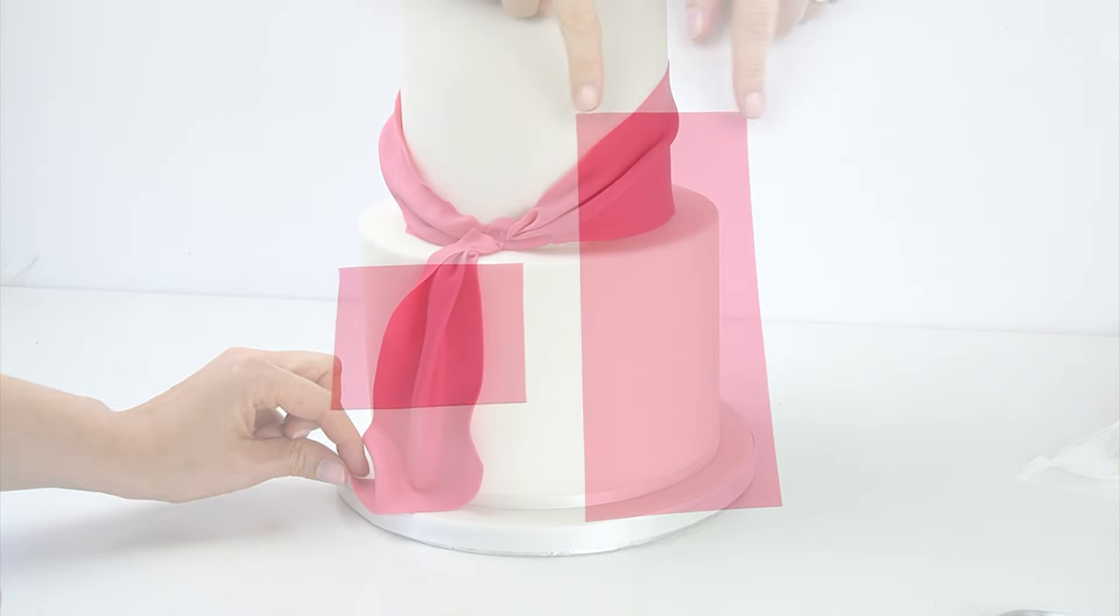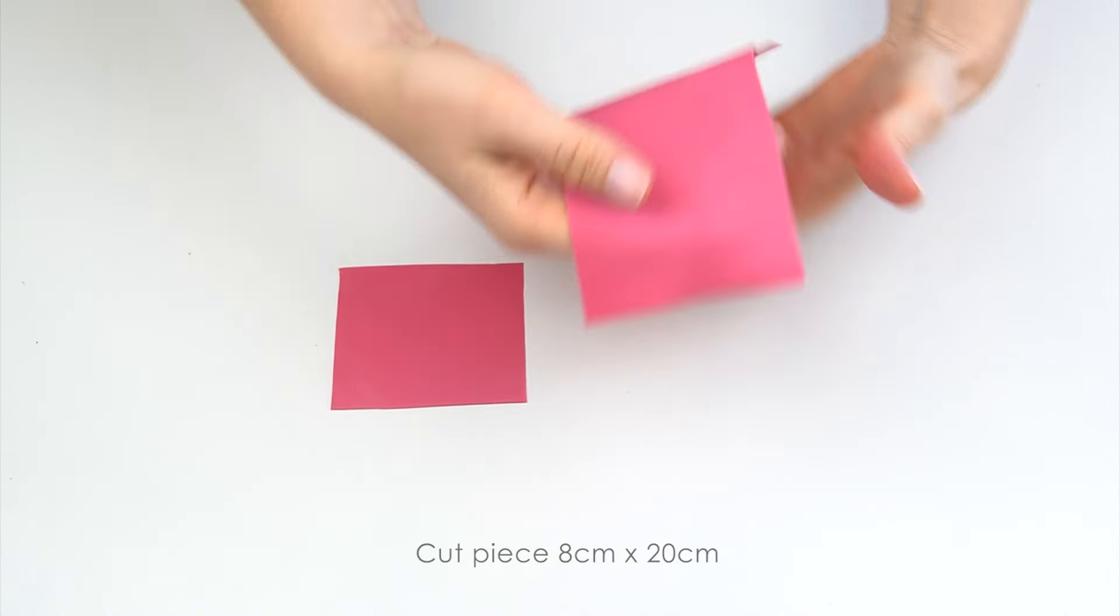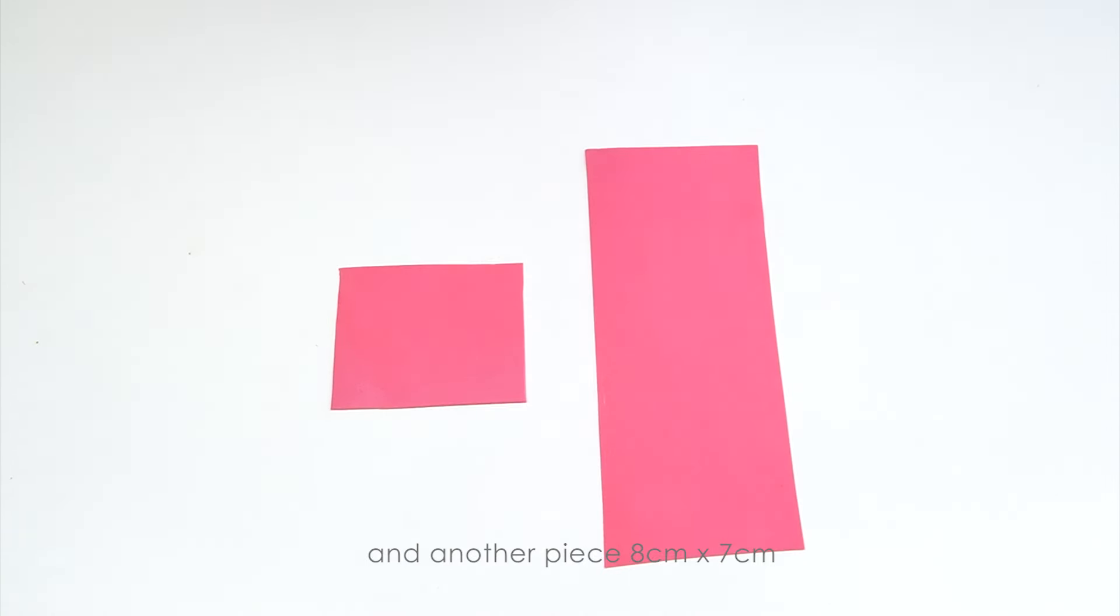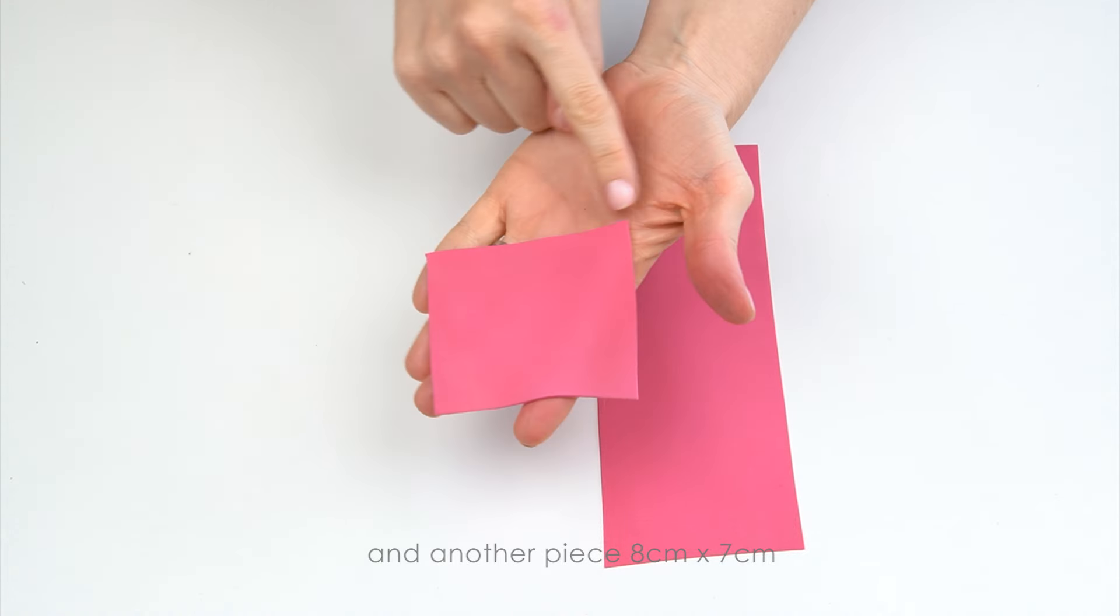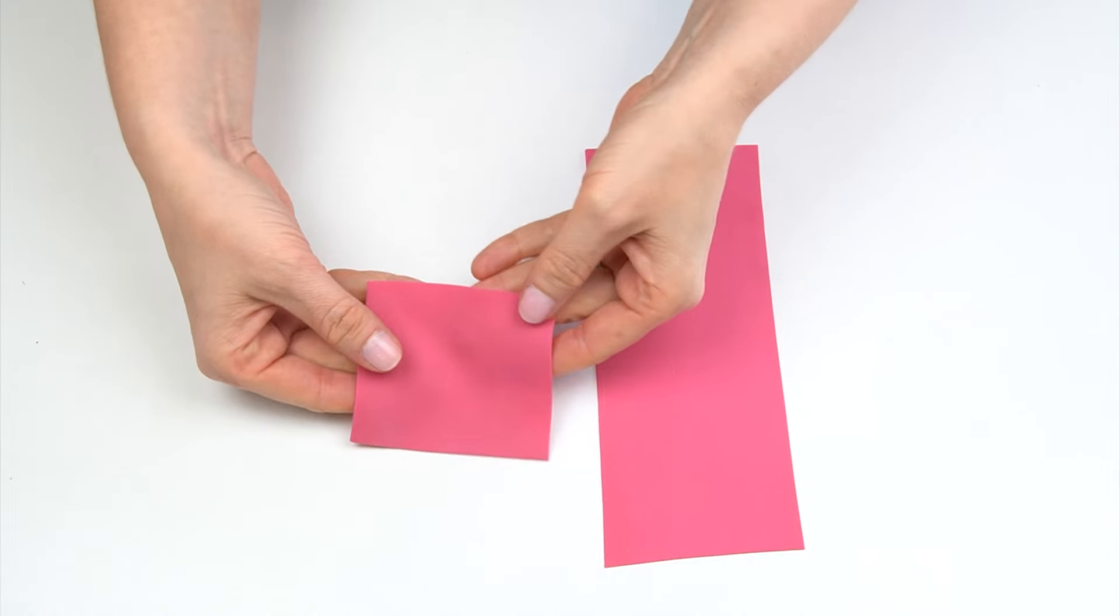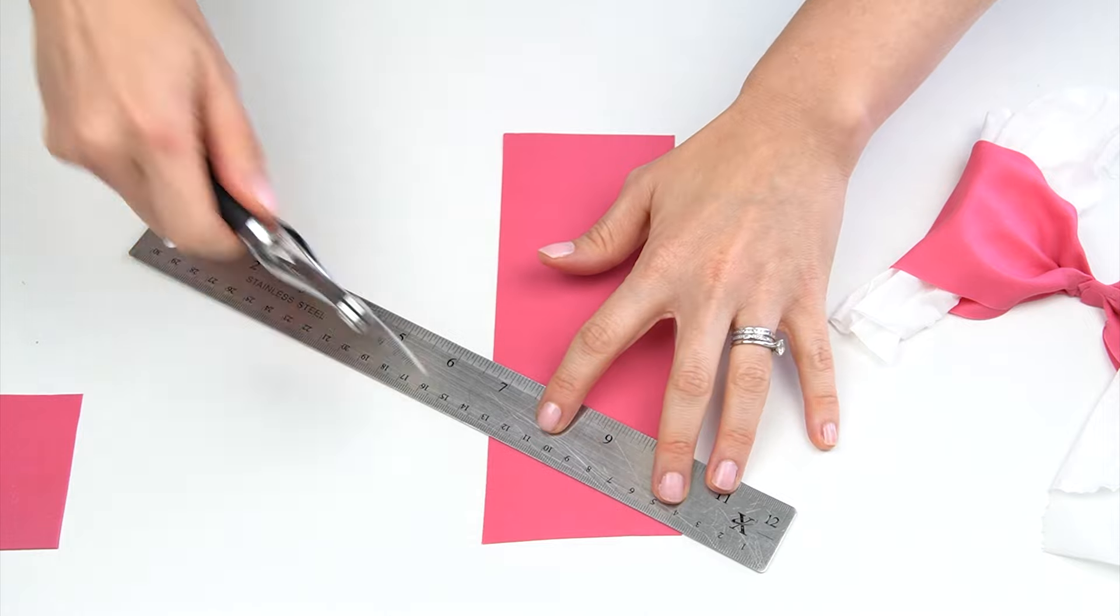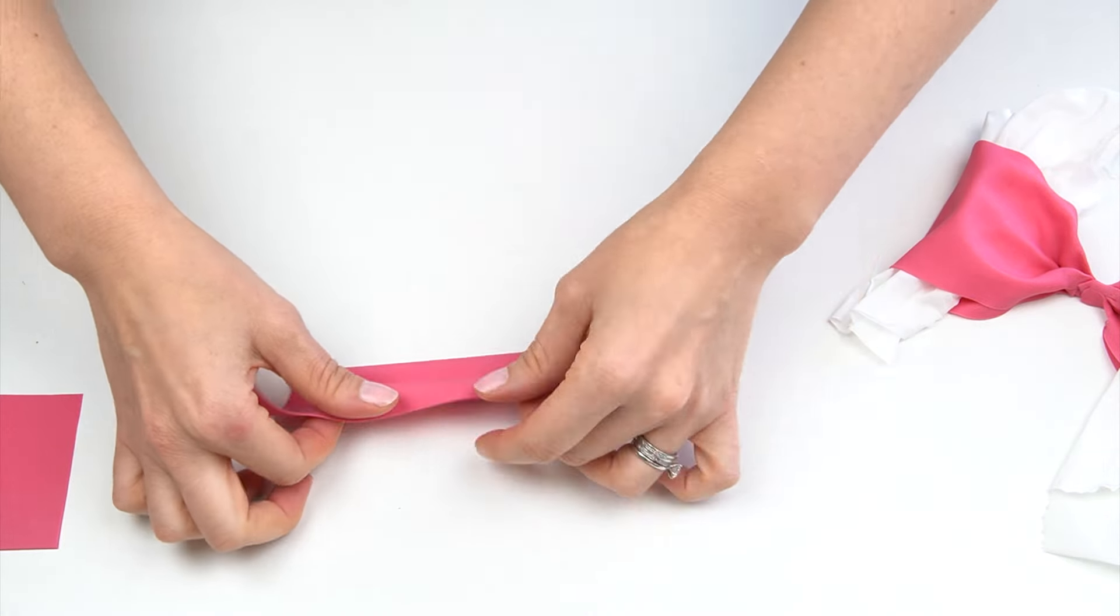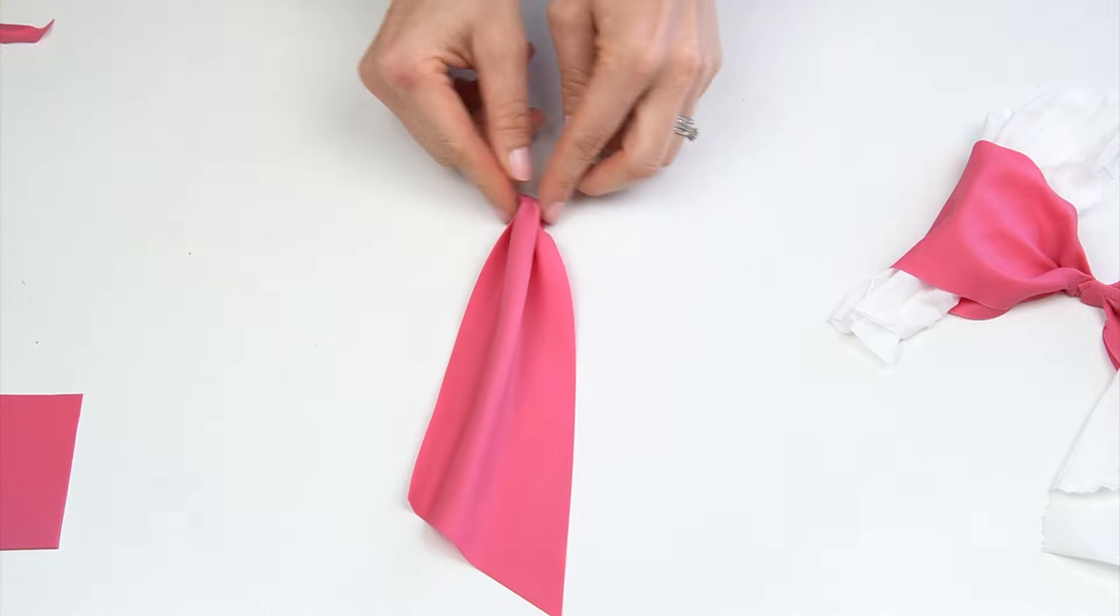I've then got another piece which is eight centimeters by 20 centimeters for the tail on the other side, and a piece which is eight centimeters by around seven centimeters which is going to be the middle of my bow. You're also going to need to bring in your bow. The first thing I'm going to do is create the tail for the other side and do exactly the same, and I'm going to squish this one down so it's quite flat.